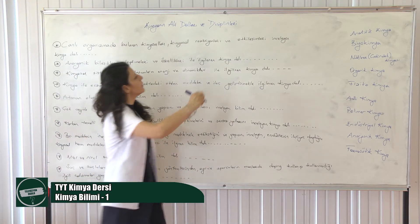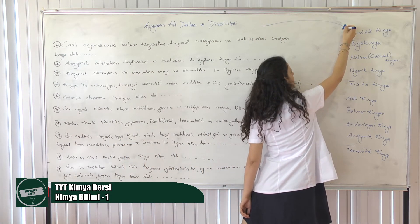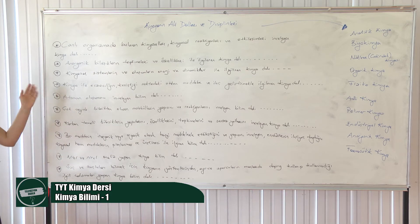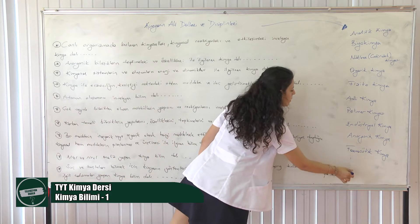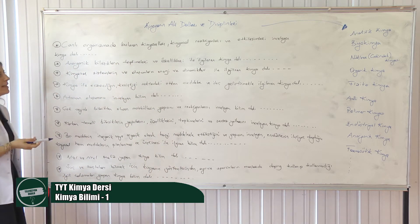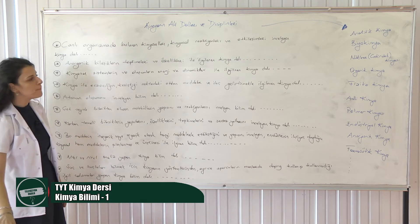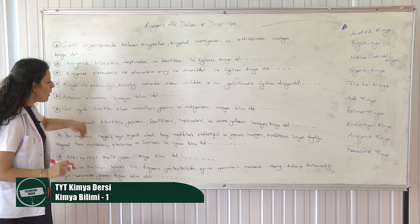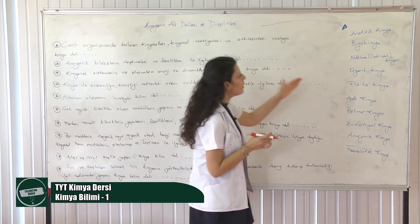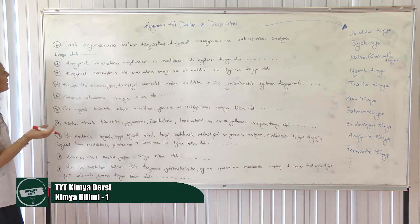Kimyanın alt dalları ve disiplinleri burada yazılanlardan daha fazla tabii ki: biyokimya, nükleer kimya, tıbbi kimya, adli kimya, polimer kimyası ve daha bir sürü kimyanın dalı ve disiplini var. Biz burada müfredatın bize kazandırmak istediği kimyanın alt dalları ve disiplinlerinden bahsedeceğiz. Bunları eşleştirme yöntemiyle yapacağız. Bunlarda bazı kelimesel tüyolar var; gidip karşıdaki kimya dallarıyla eşleştirme yapacağız. Zaten test sorusu olarak çıkacağı için bu bizim için bir sıkıntı değil. Başlayalım.